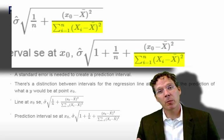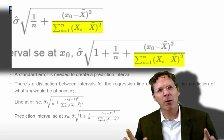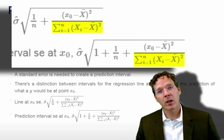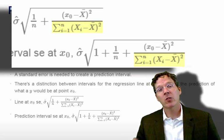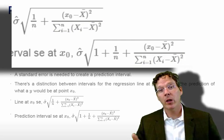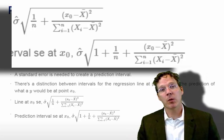The second is this summation xi minus x bar squared in the denominator. That's basically how variable my x's are. The more variable my x's are, the smaller this term becomes and the lower my prediction error is. So again, not unlike our slope estimate where the more variable our regressors were, the less variable our slope estimate is, the same thing happens in our prediction error here.